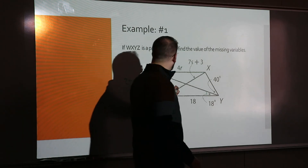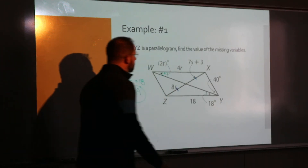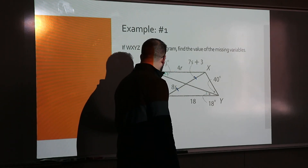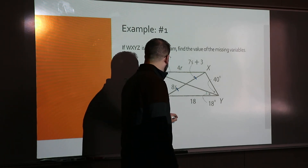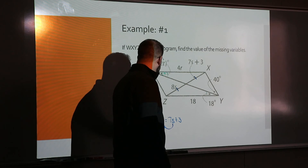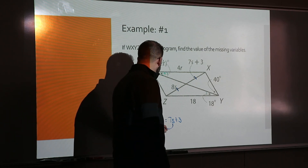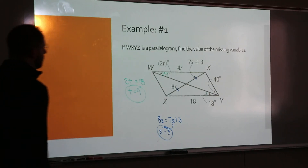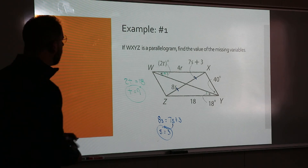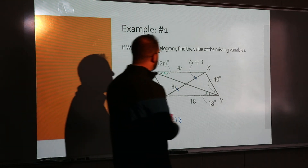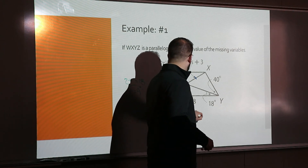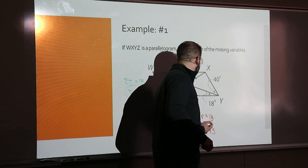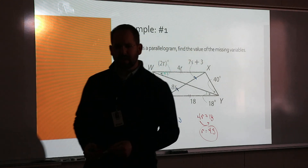For S: by Theorem 6-7, the diagonals bisect each other, so the two half-segments must be equal: 8S equals 7S plus 3. Subtract 7S from both sides: S equals 3. For R: the top and bottom walls are equal by Theorem 6-3, so 4R equals 18. Divide by 4 and R equals 4.5 — decimals can happen.